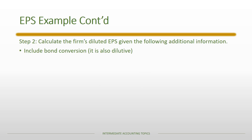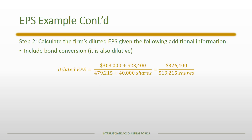Including the bond conversion gives us a numerator and denominator effect once more, yielding our final diluted EPS. Just like basic EPS, diluted EPS is reported to the nearest penny, so we report a diluted EPS of $0.63 per share.